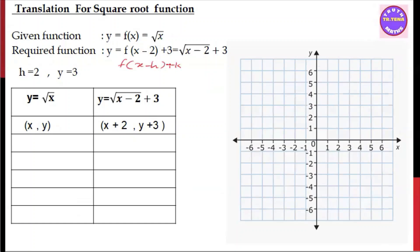From y = √(x − 2) + 3, we identify: H is equal to 2 and K is equal to 3. So the horizontal shift is 2 and the vertical shift is 3.